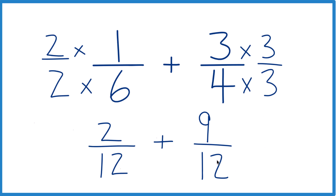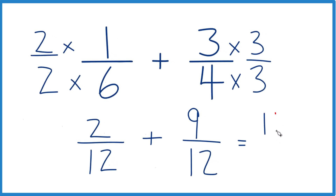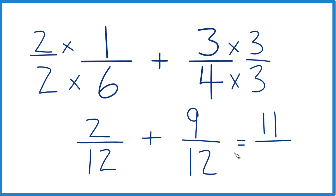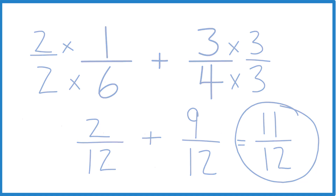But now we have the same denominator. We're just going to add the numerators: 2 plus 9 equals 11. When we add fractions with the same denominator, we just bring that right across. We end up with 11 twelfths. So 1 sixth plus 3 fourths equals 11 twelfths. This is Dr. B, and thanks for watching.